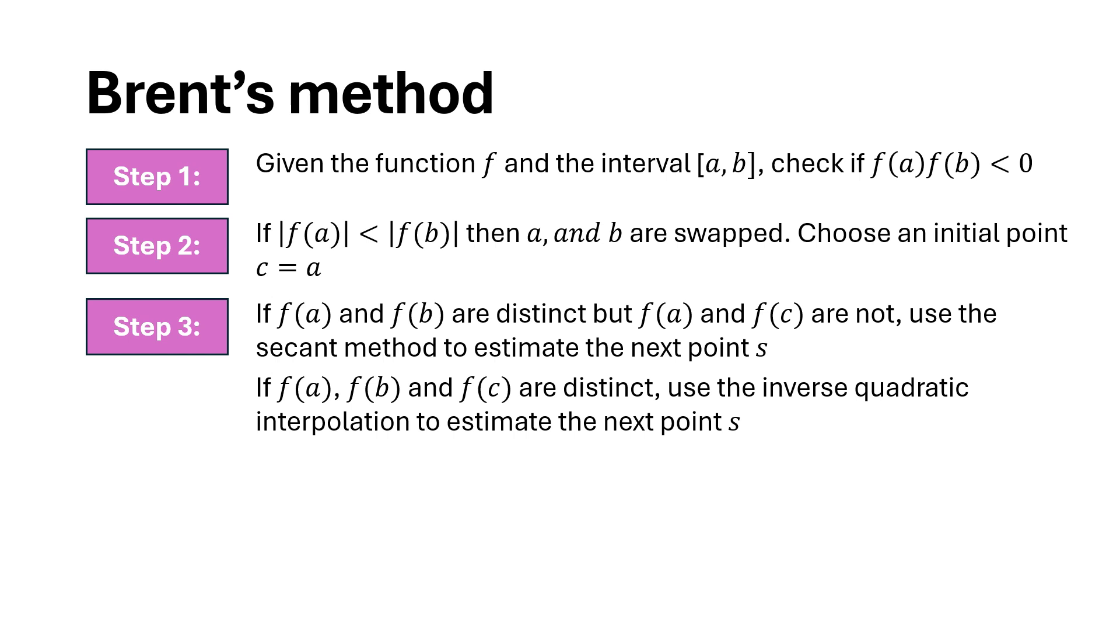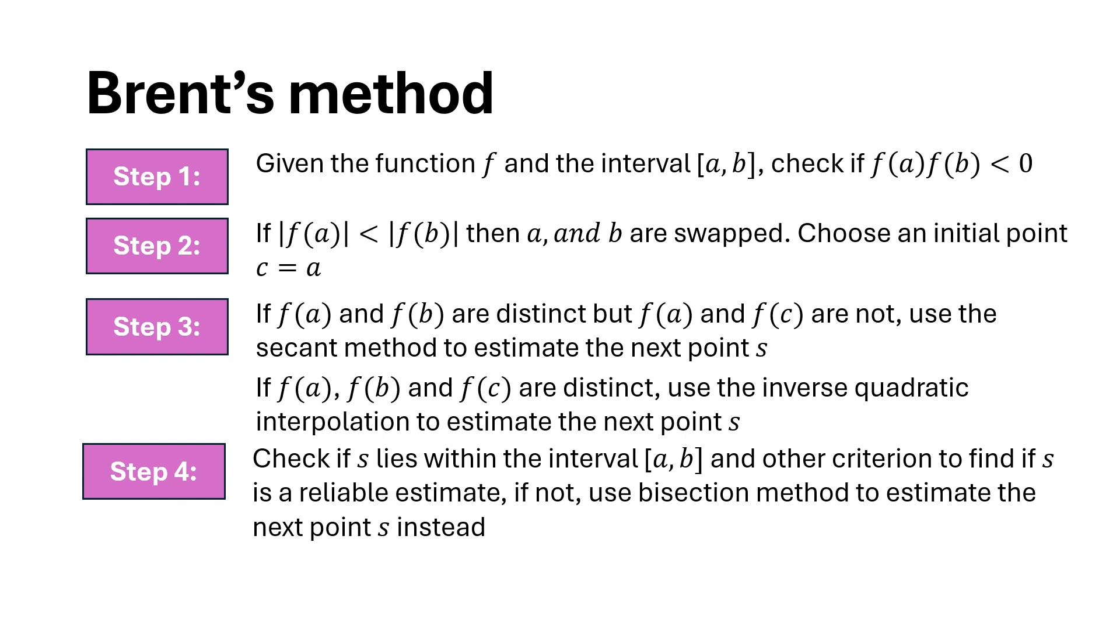If the next estimate does not lie in the interval [a, b] or it does not pass the criterion to be considered as a reliable estimate, we use bisection method to estimate the next point.